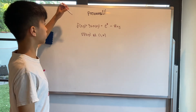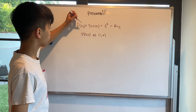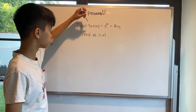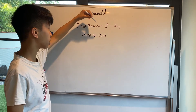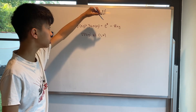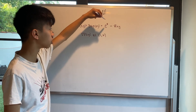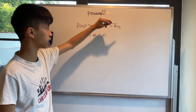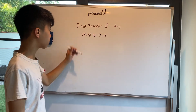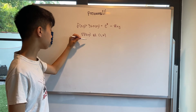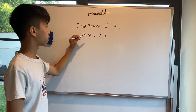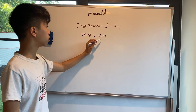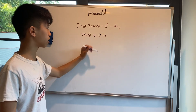Let's do another problem. Consider the function f(x, y) = 3·sin(xy) + e⁸ − 8xy. Find the gradient of f at (1, π).